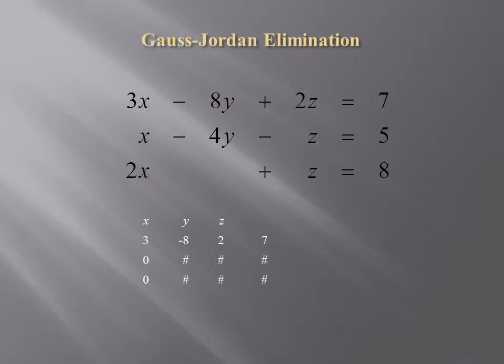Notice that after pivoting on the number in the first row, first column, the first row doesn't change. The second row and third row begin with 0, and all the other numbers will change because of the row operations. We next want to pivot on the number in the second row, second column, and hence we want to get a 0 above and below it.